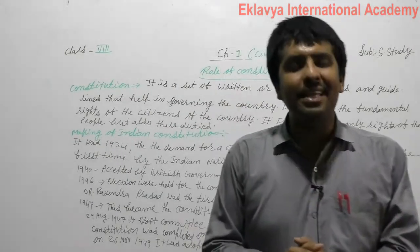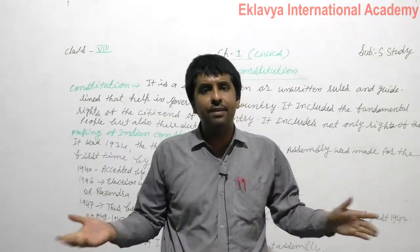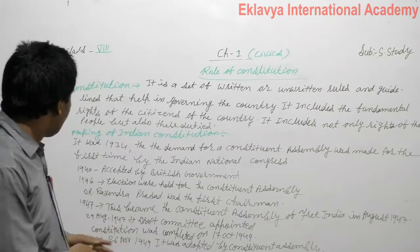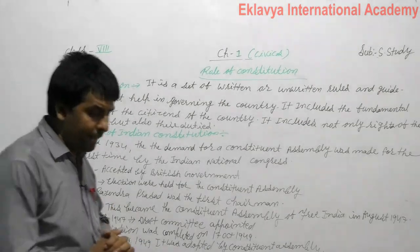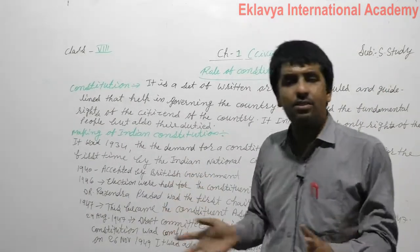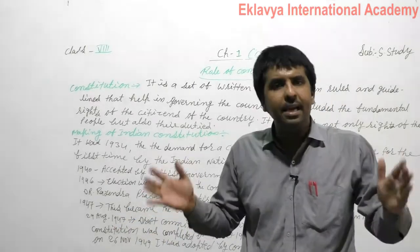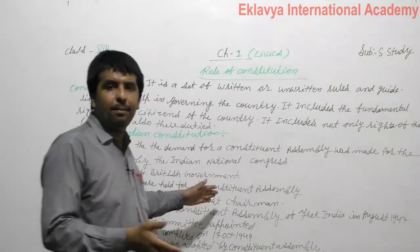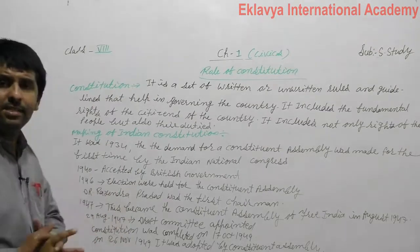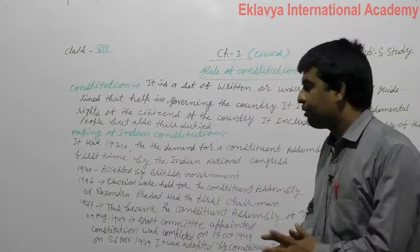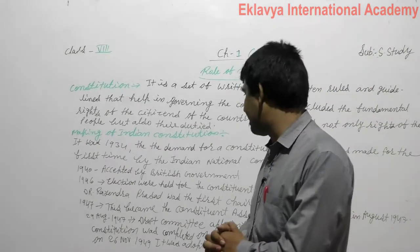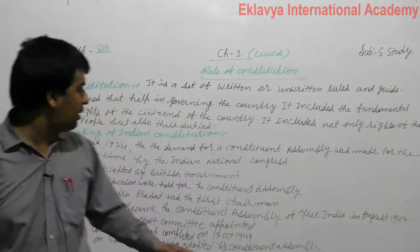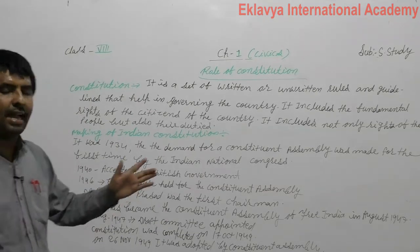Dr. Rajendra Prasad, who was the first President of India, was appointed as the chairman of the constituent assembly. In 1946, elections for the constituent assembly were held. Dr. Bhim Rao Ambedkar became the first chairman of the drafting committee. He is also known as the father of the constitution. In 1947, the constituent assembly became the constituent assembly for free India.